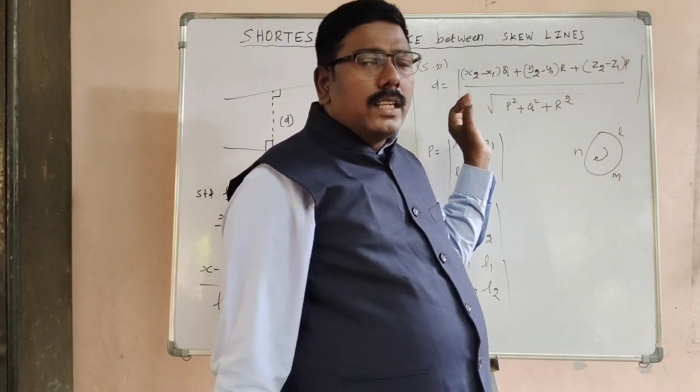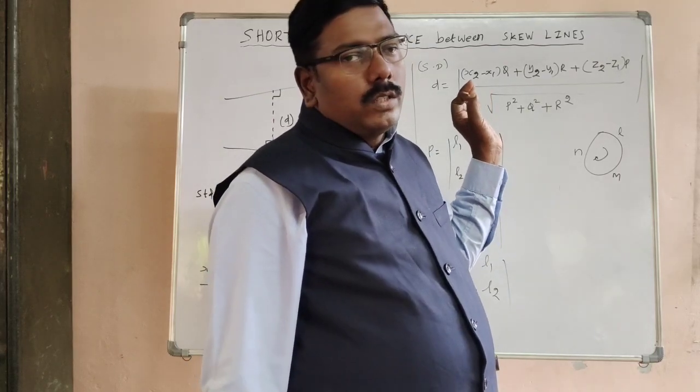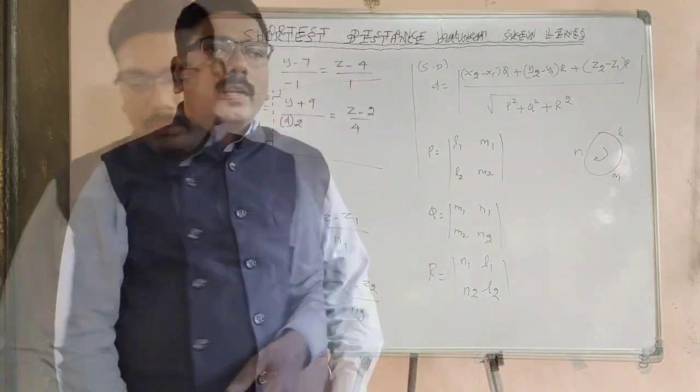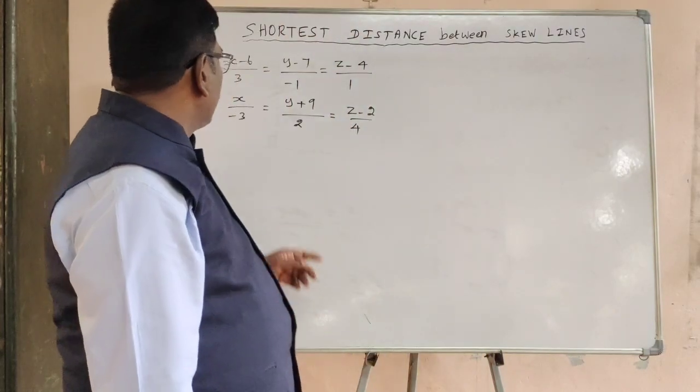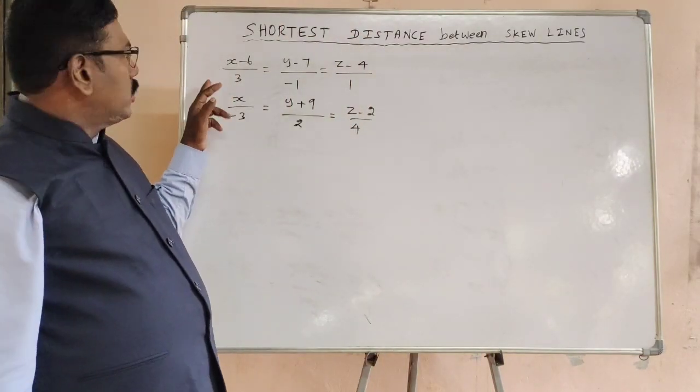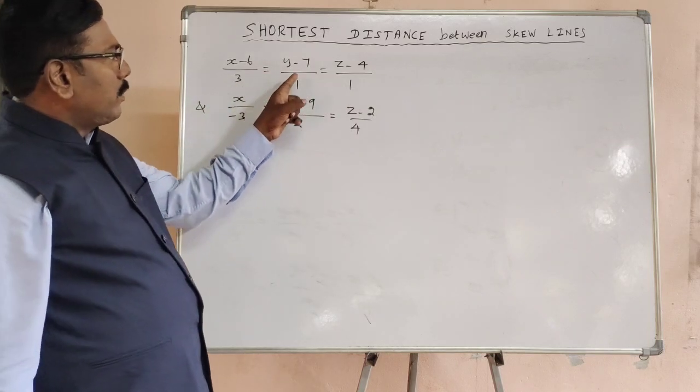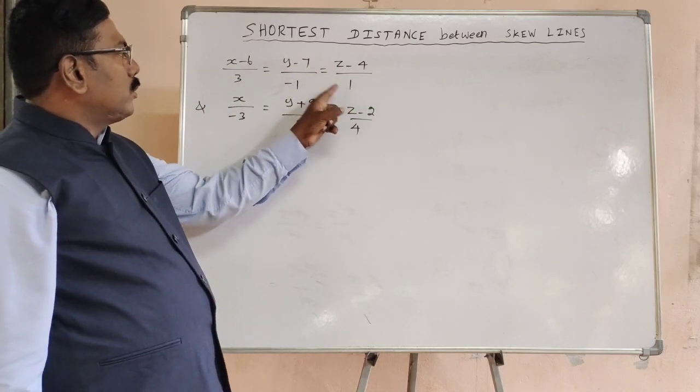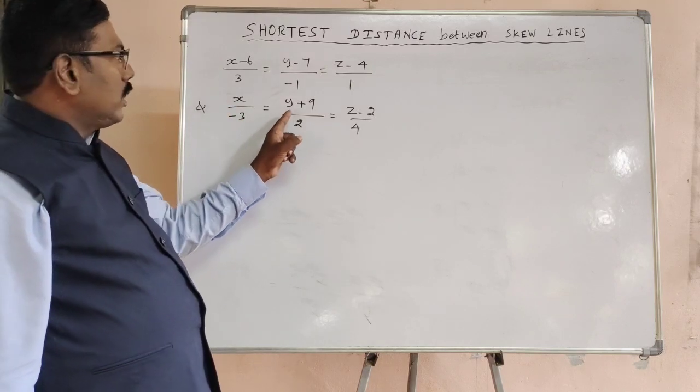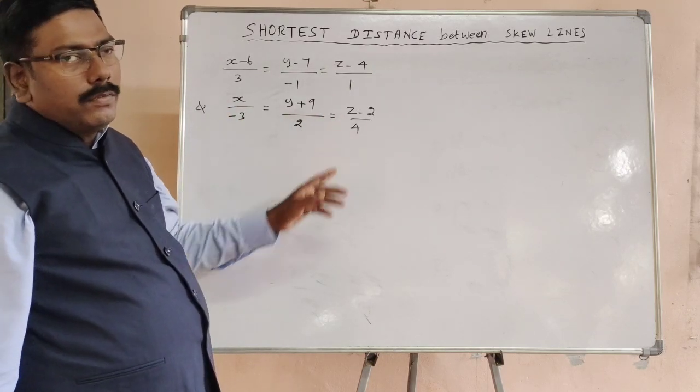Now let me explain one problem. Find the shortest distance between these two skew lines: x minus 6 by 3 equal to y minus 7 by minus 1 equal to z minus 4 by 1, and x by minus 3 equal to y plus 9 by 2 equal to z minus 2 by 4.